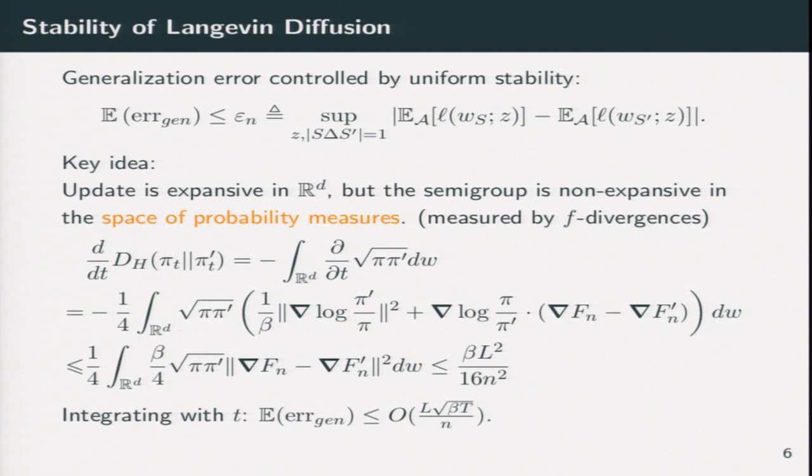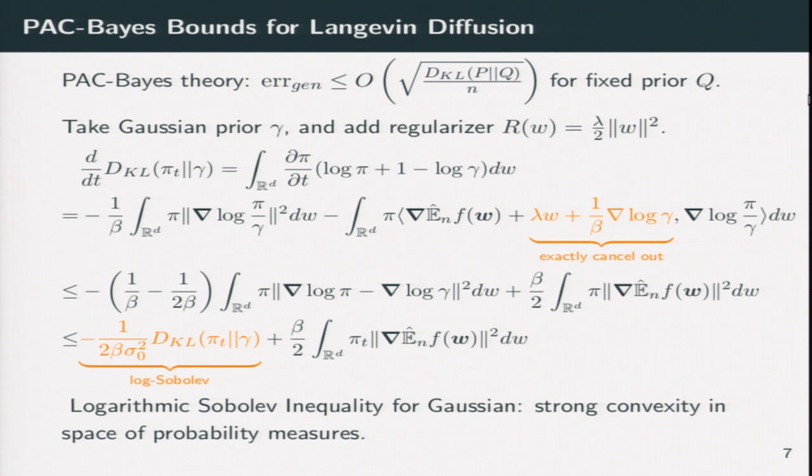which makes this analysis significantly different from the stability analysis in previous work, is that the semi-group itself of the Langevin algorithm is non-expansive in a space of measures. And the way we do that is we control the loss by basically a difference between the two distributions in a space of measures in terms of a squared Wasserstein distance. And we take time derivative with that. And by doing some integration by parts, we arrive at this bound. Beta is the temperature parameter and L is the Lipschitz parameter.